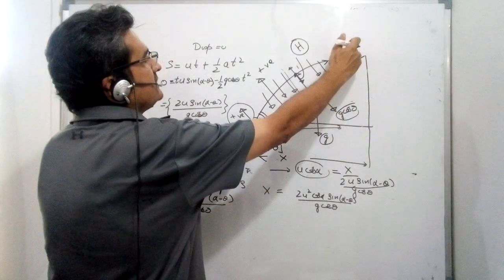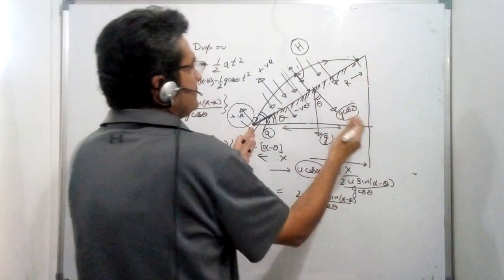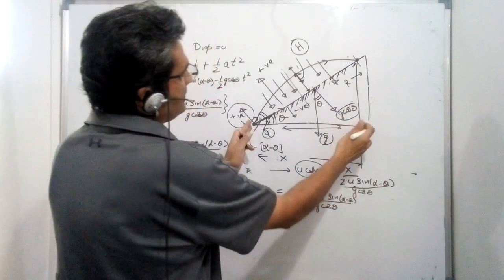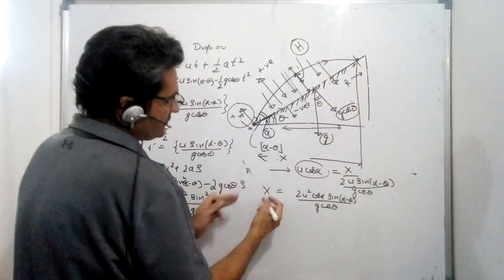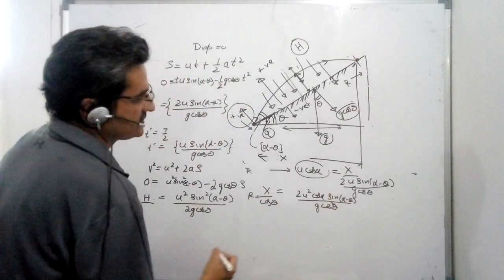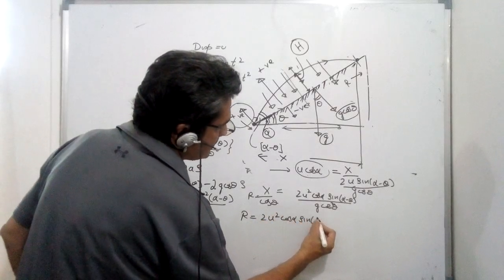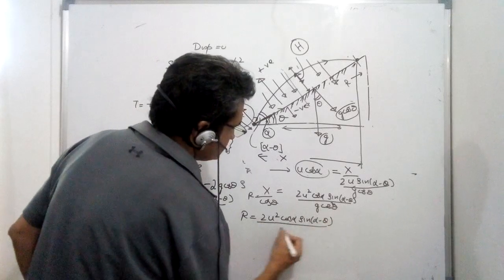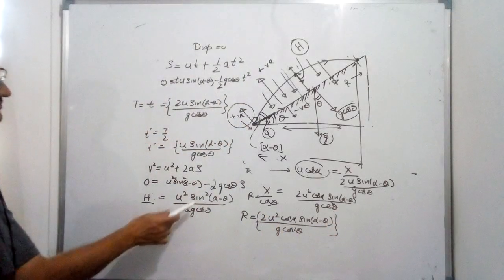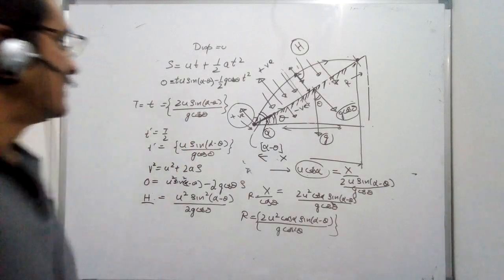The range R along the inclined plane is related to the horizontal distance x by R = x / cos theta. Substituting, the range becomes R = 2U² cos alpha sin(alpha minus theta) / (G cos²theta). So we now have all three key relationships for projectile motion on an inclined plane: the time of flight, the maximum height, and the range.